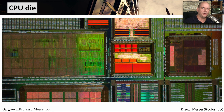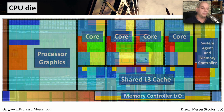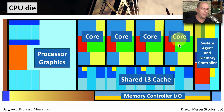There is a microscopic world of components that we are now fitting into a single CPU. This is just one example of a CPU die — you can see it is a mixture of different components all put together on the same physical CPU. If we look at this in a more abstract form, you might see multiple cores on that CPU, those cores having their own level one and level two cache, and a shared level three cache.